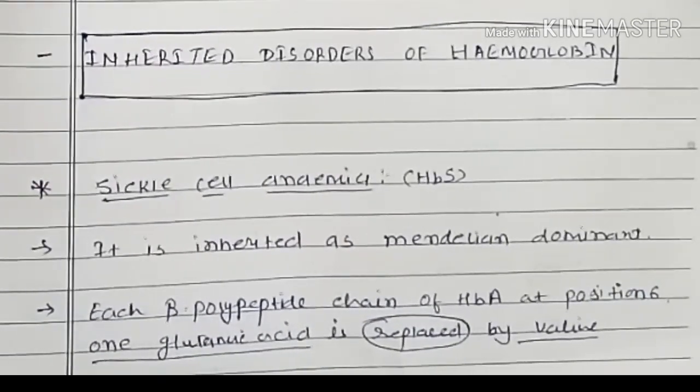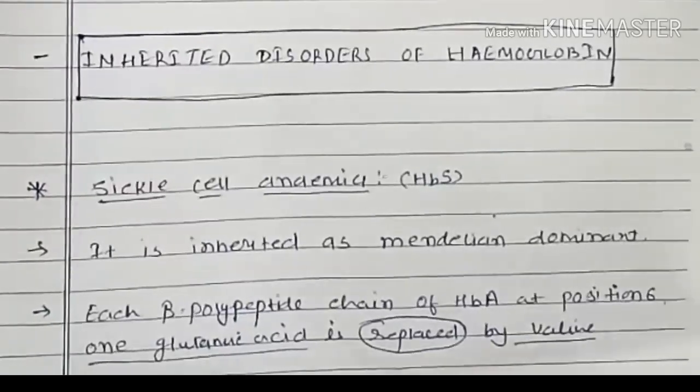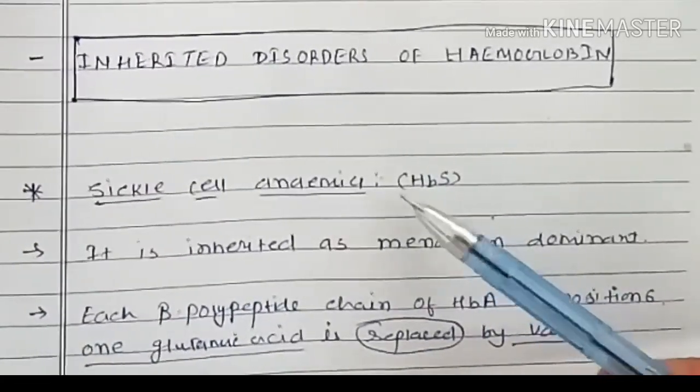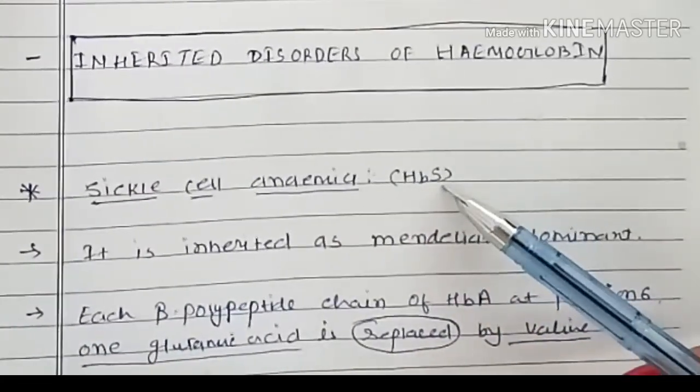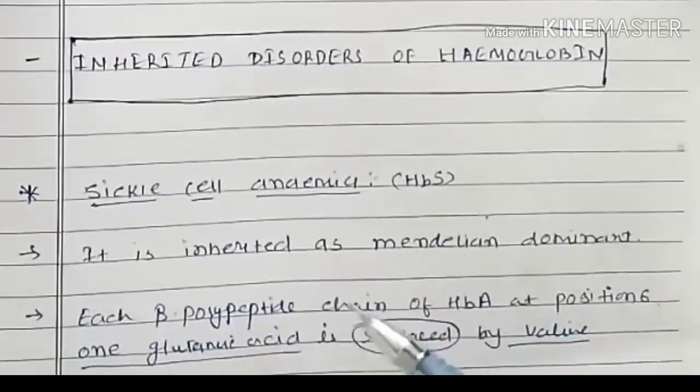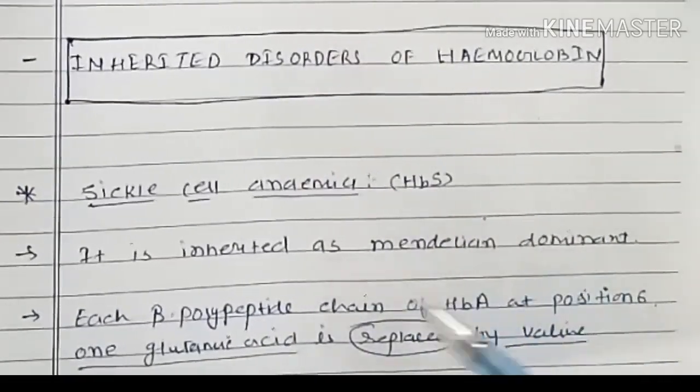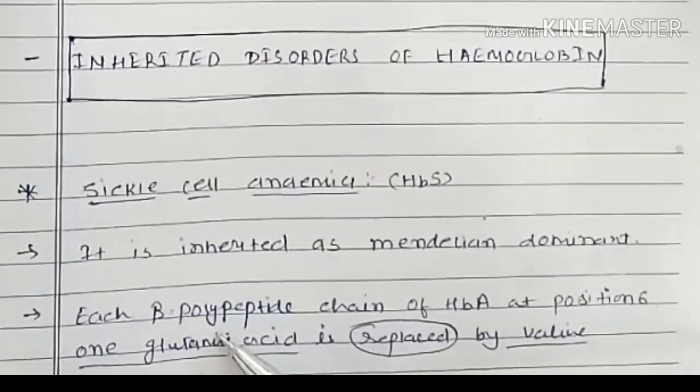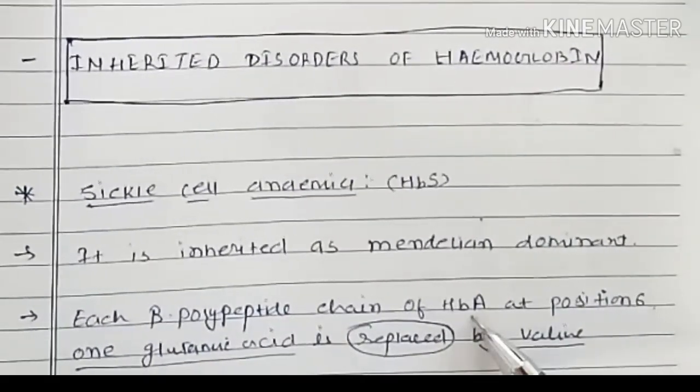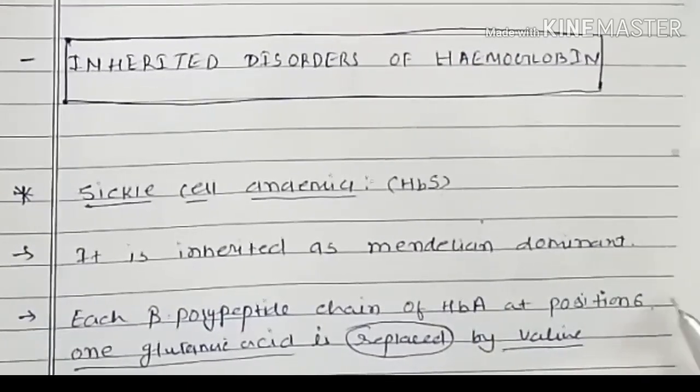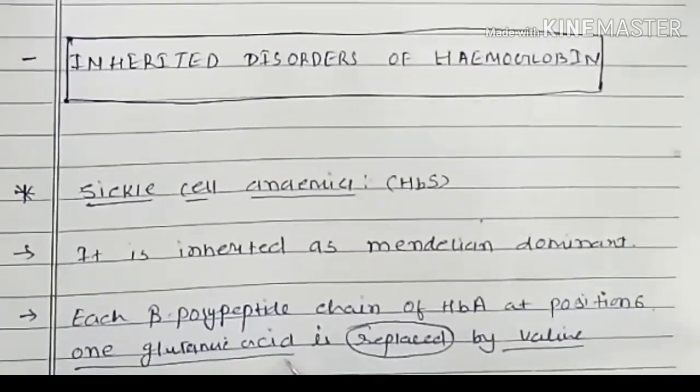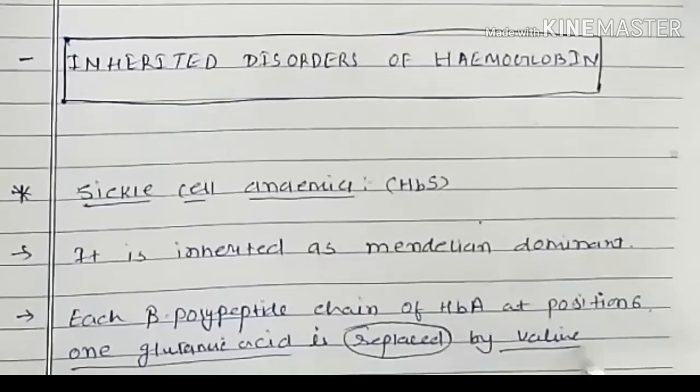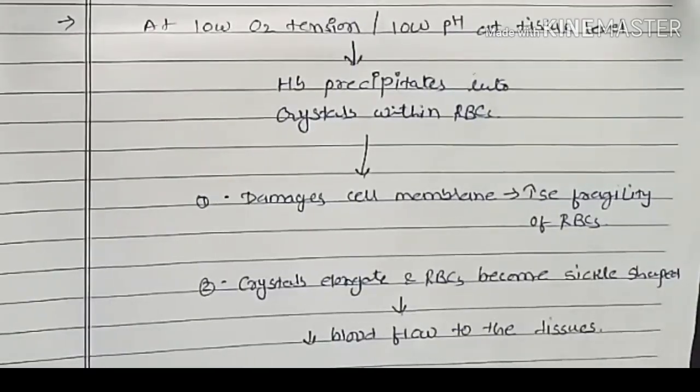Inherited disorders of hemoglobin. First one is sickle cell anemia where hemoglobin S is found. It is an inherited Mendelian dominant disorder. In this, each beta polypeptide chain of HbA at position 6, one glutamic acid is replaced by valine.